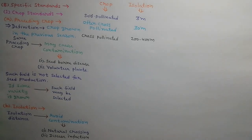Isolation distance of seed crop is required to avoid contamination due to natural crossing and disease infection by wind and insects from neighboring fields. Isolation distance depends on the mode of pollination of the crop. Generally, 3 meters isolation distance is kept for self-pollinated crops, whereas for often cross-pollinated crops it is 30 meters. And 200 to 400 meters or more distance is kept for cross-pollinated crops.